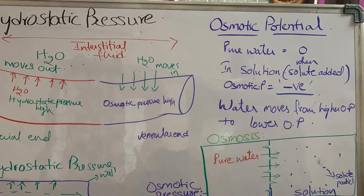Osmotic potential — what is meant by osmotic potential of water? The potential of the water molecules to move from a hypotonic solution to a hypertonic solution is known as osmotic potential. The osmotic potential of pure water is zero. When some solute is added to pure water, it becomes a solution, and the osmotic potential of water in that solution becomes negative — that is, it is decreased. Since zero is greater than a negative value, water molecules move from higher osmotic potential to lower osmotic potential, that is, from pure water into the solution.